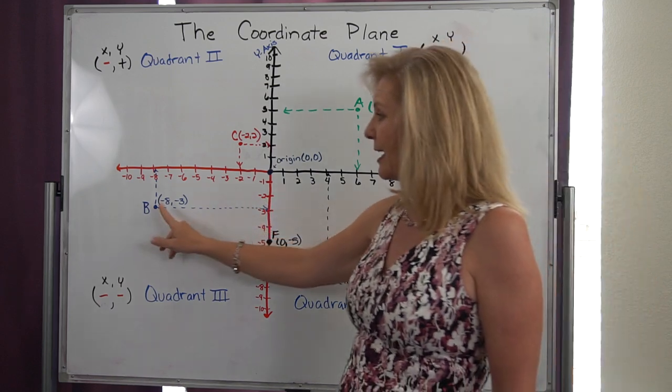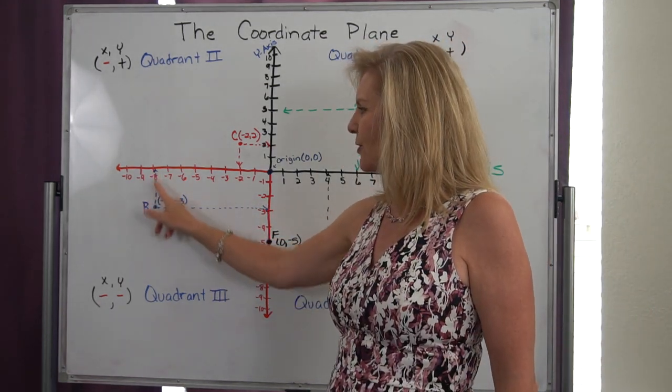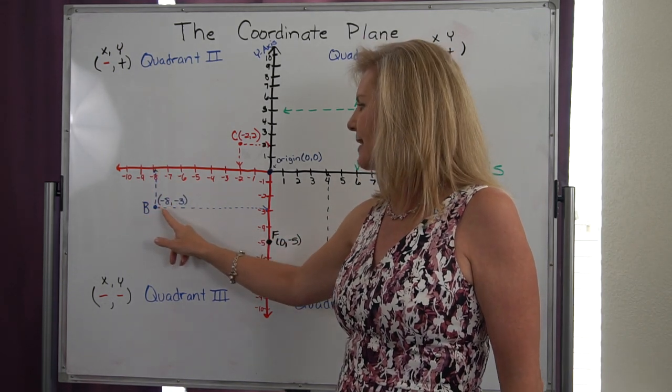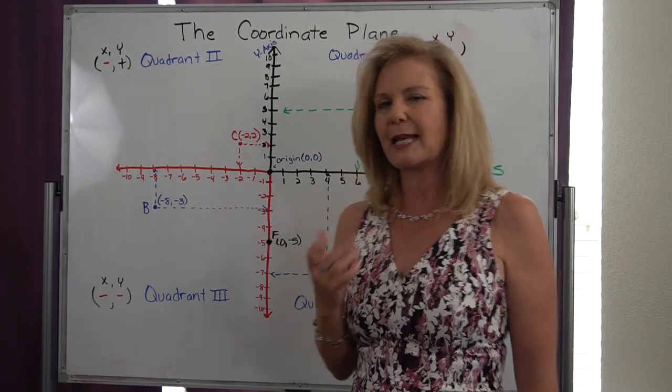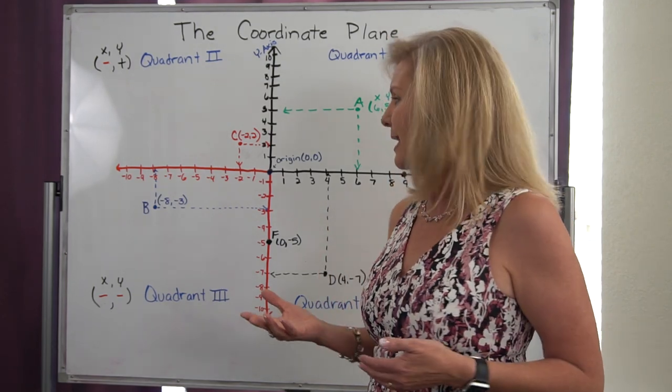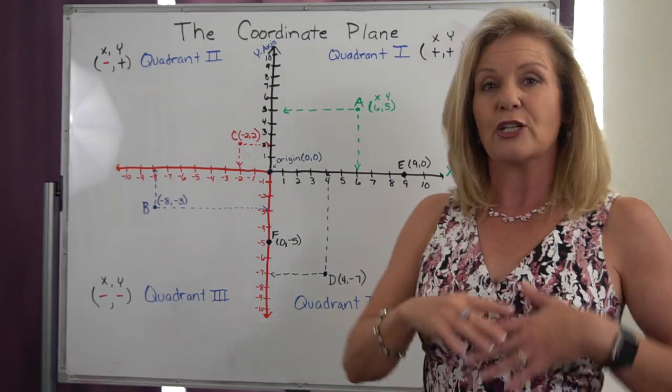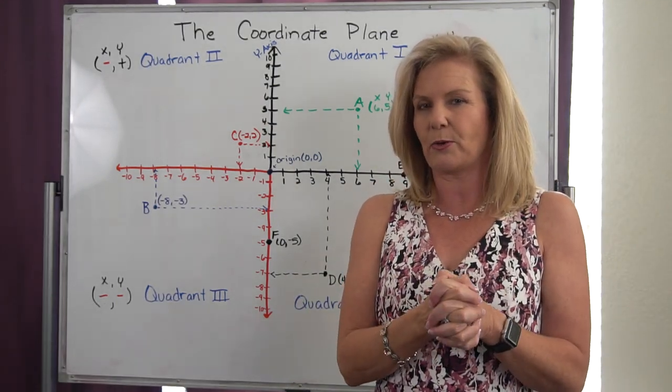Now point B, again, you have to go to your x position first. So I'm going to go straight up from the x. I see it's negative 8. Then I'm going to go across to the y. I see it's negative 3. So that point B is actually location (-8, -3). And we can do that for C and we can do it for D. So any location within the quadrants can be represented by an ordered pair.